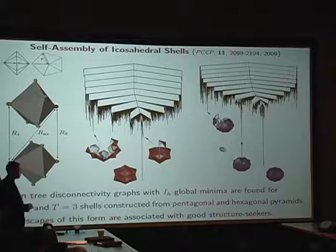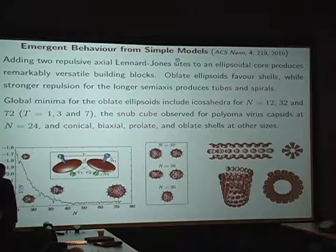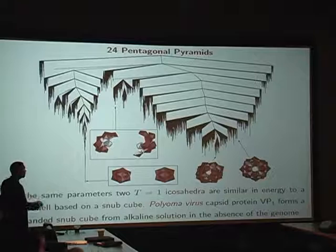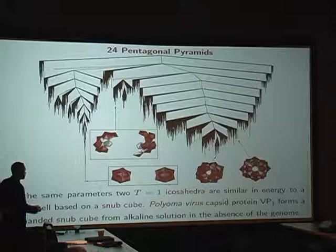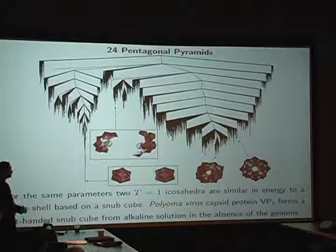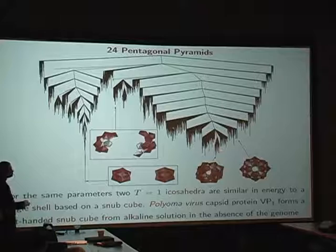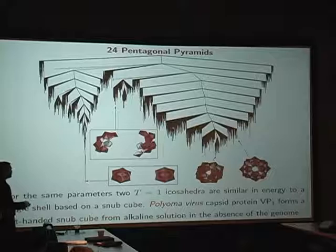We'll put 24 pyramids together, because that could make two icosahedra, but in fact, it also makes a snub cube. And this is interesting, because at the size 24, polyomavirus capsid protein VP1 actually does make a left-handed snub cube, without the genome. So I could claim perhaps this is an emergent property. We didn't fit to this or anything. It's just there for the same potential that stabilizes the icosahedra. So this representation uses decorated rigid bodies, but you can have more compact ones.